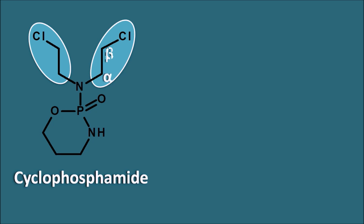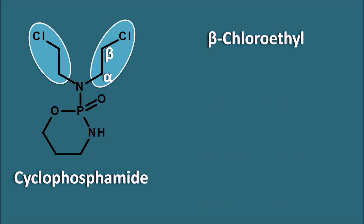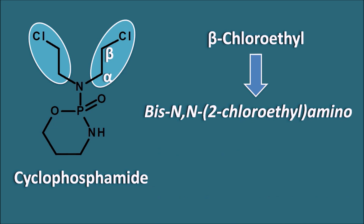In the structure, there is an alpha carbon and a beta carbon. The side chain is the beta-chloroethyl side chain, present twice on the nitrogen. These groups are called bis-N,N-2-chloroethylamino groups, and this group is responsible for the drug's action as an alkylating agent.